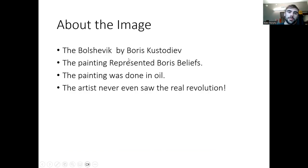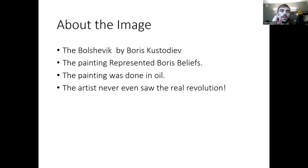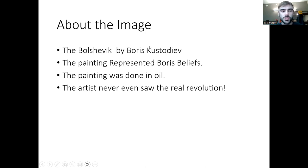The image is called 'The Bolshevik' by Boris Kustodiev. The painting represents Boris's beliefs specifically. It was done in oil — a very classical style common for the time. Interestingly, the artist never actually saw the revolution. He was paralyzed from the waist down, so he did all kinds of paintings from his room. He heard about the ideas presented by the Bolsheviks and thought it would be something interesting to share with the people.